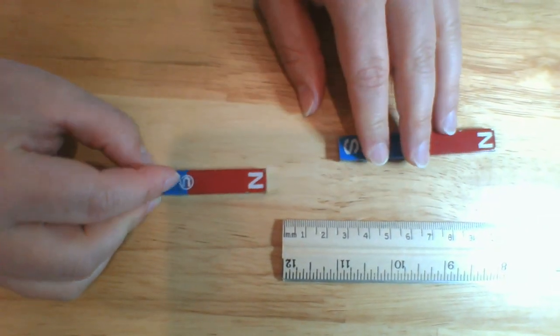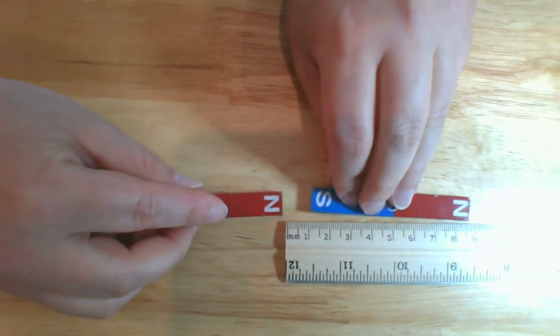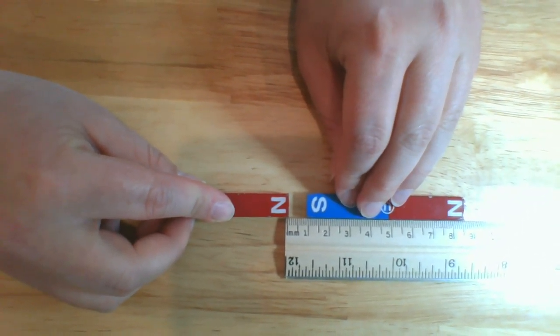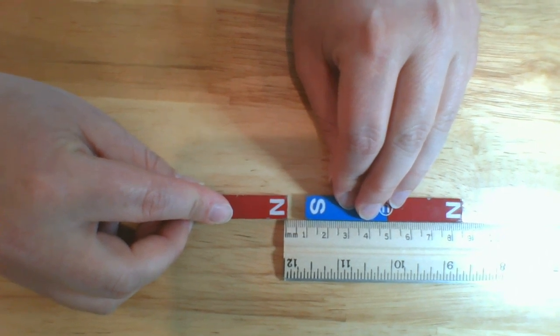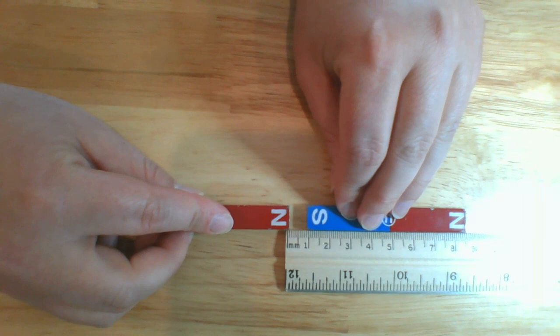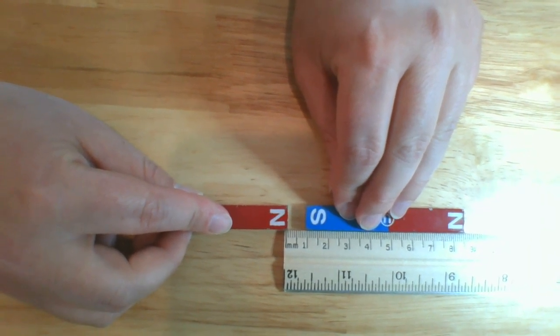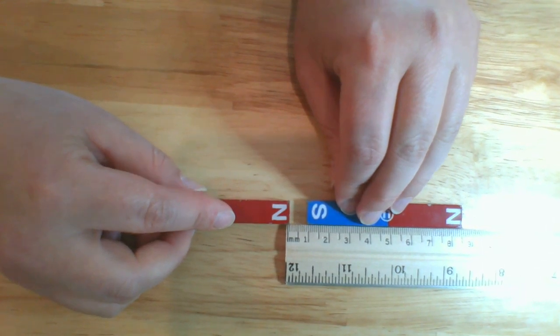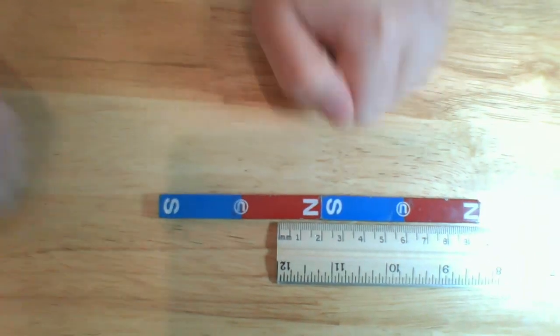Now let's try at one centimeter. So as I'm holding them, I don't know if you can see, but I'm having to do a lot of work to keep these magnets from attracting. So it feels like there's a lot more energy that I have to put in to keep them from coming together. And let's let go. And they came together really quick.